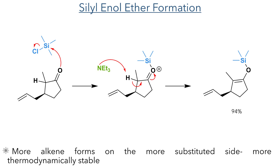The silyl enol ether was formed using TMS chloride, which first silylates the ketone, and triethylamine deprotonates the alpha position to form the alkene in a 94% yield. This occurs on the more substituted side as this is the more thermodynamically stable product.